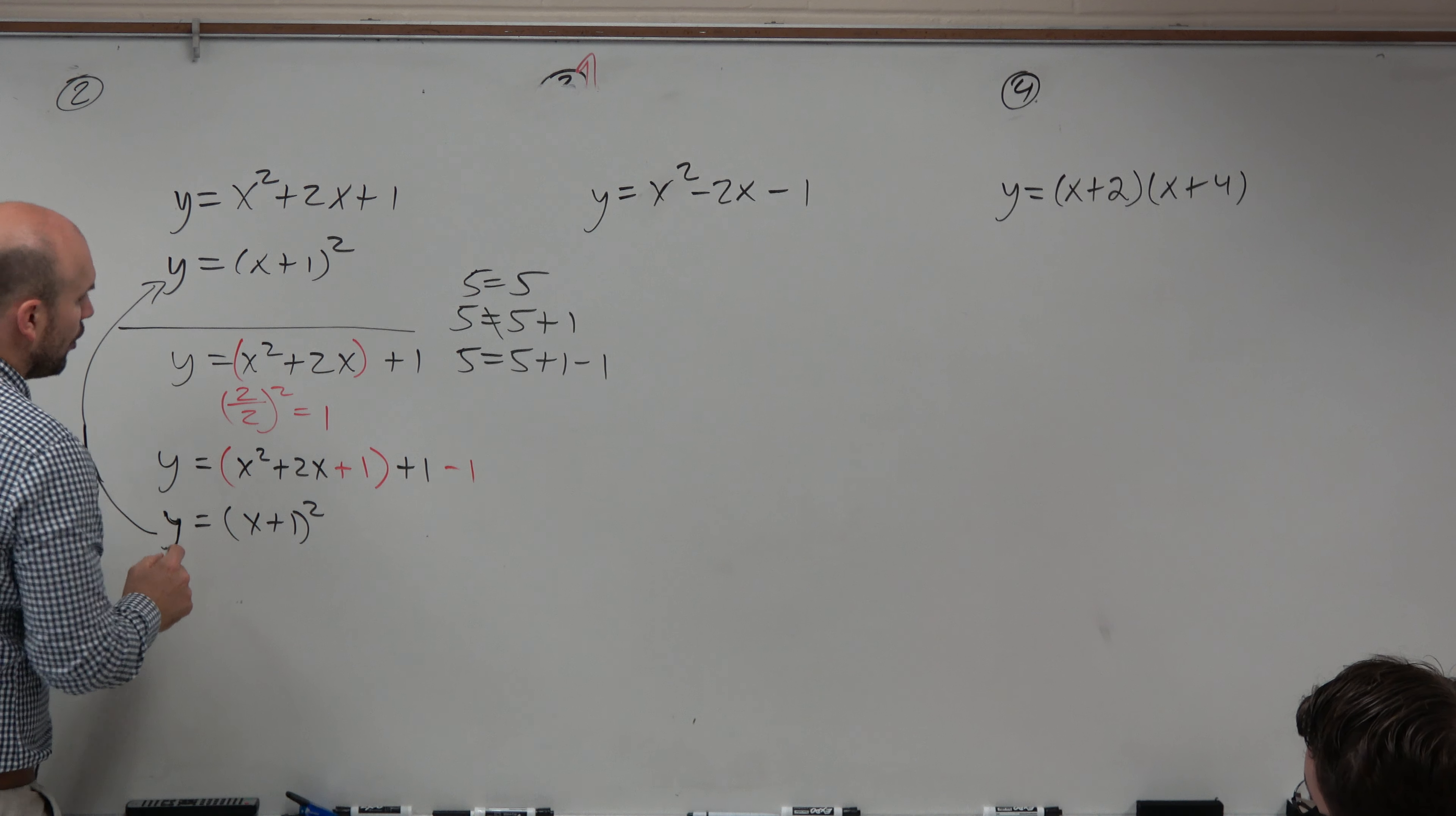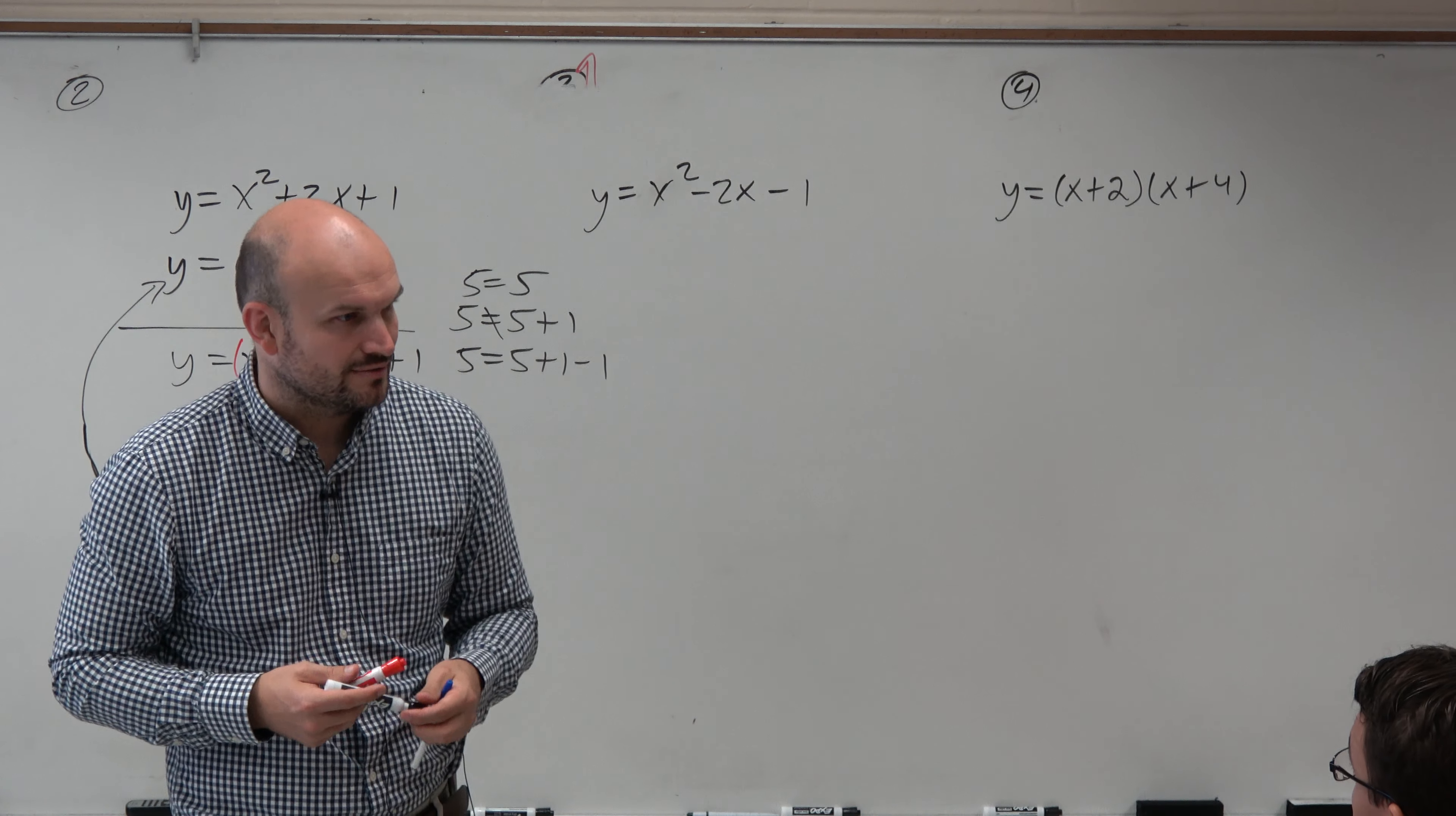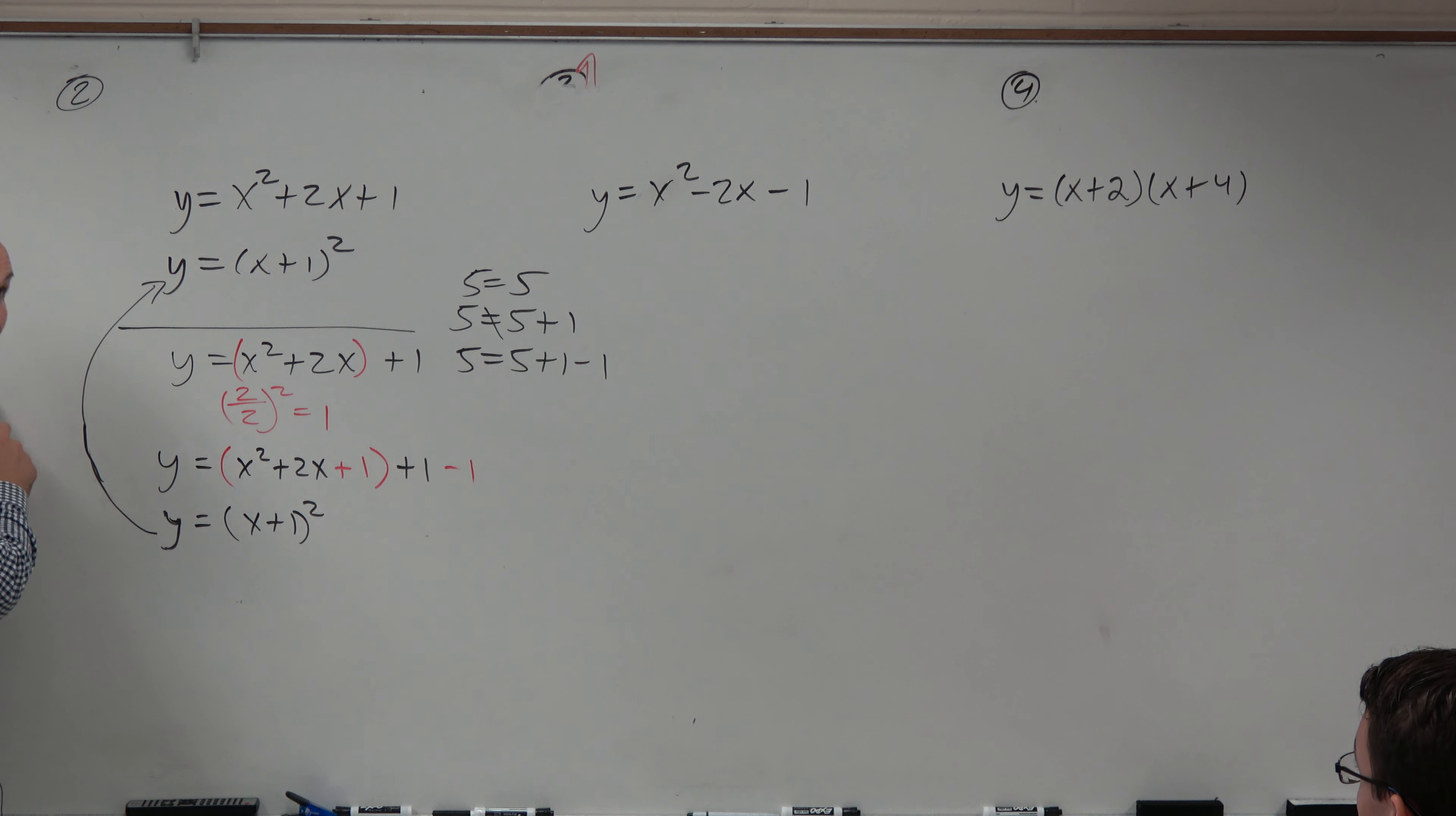So I just went through this whole explanation of completing the square when we already knew the answer by factoring, right? But typically, guys, you're not going to have a problem that's going to be that simple, right? But you should recognize it. Why did you do 2 over 2 squared? Because that is the process of completing the square, is always taking the middle term, dividing it by 2, and then squaring it.